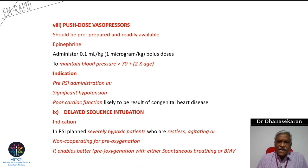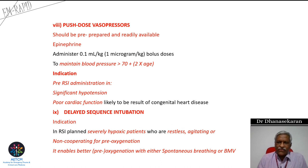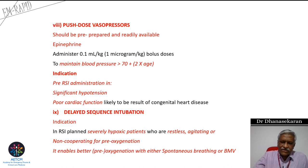Another concept is delayed sequence induction. For patients who are hypoxic but agitated and non-cooperative, pre-oxygenation may not be possible. In such cases, a smaller dose of ketamine — 0.25 mg/kg, which is one-fourth to one-third of the anesthetic dose of 1-2 mg/kg — can be given to quiet the patient. If spontaneous breathing continues, oxygen can be administered. If spontaneous respiration is inadequate, supplement with bag-mask ventilation.